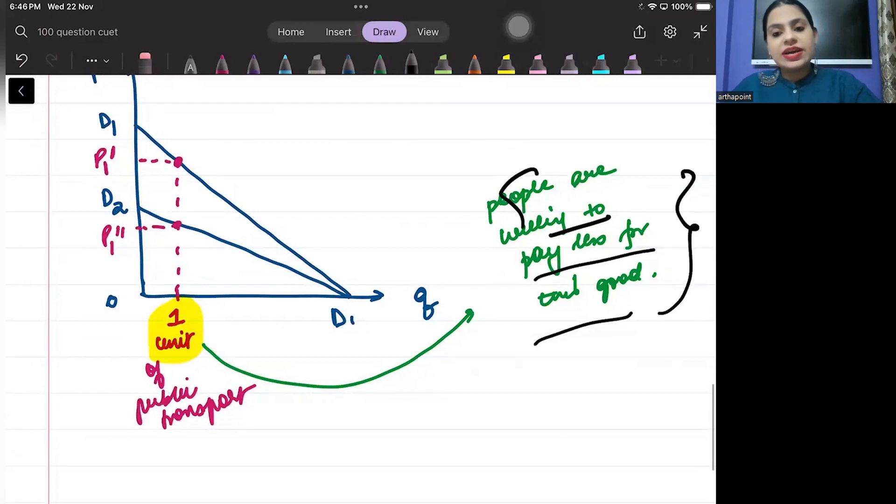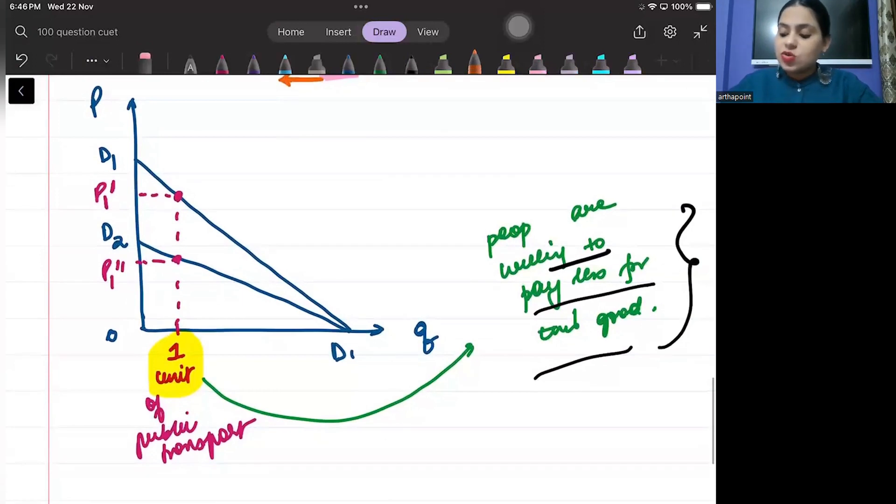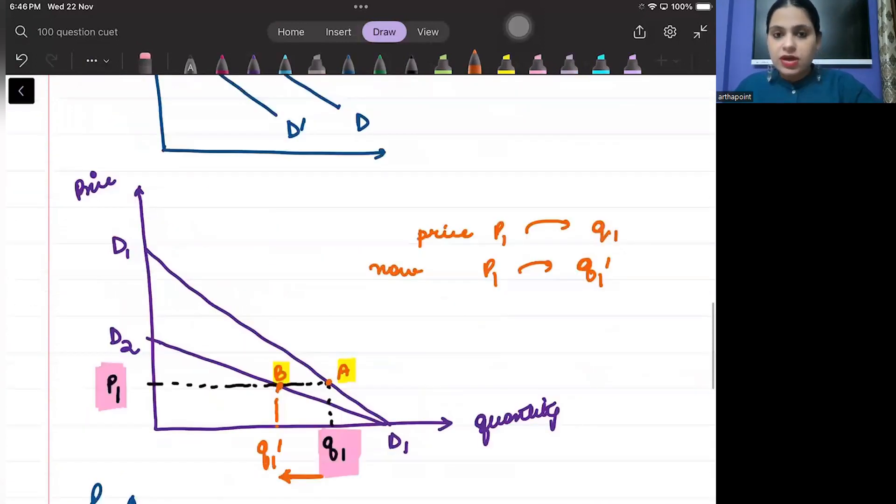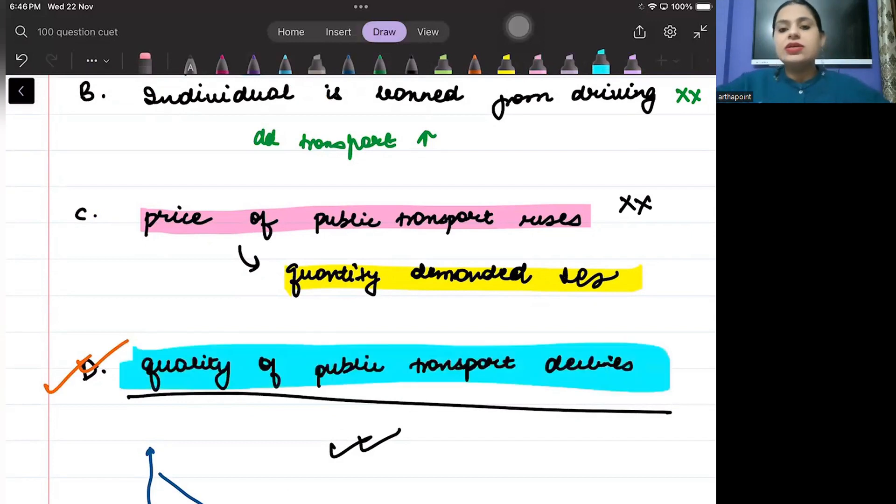So, the two reasons are correctly explained. Both are well explained and both tell why the demand curve is going from D1D1 to D2D1. Both of them are explained well. So, answer should be D. The correct answer to this question will be D.